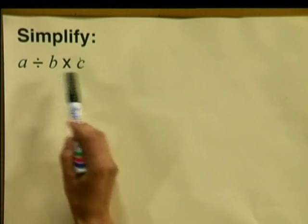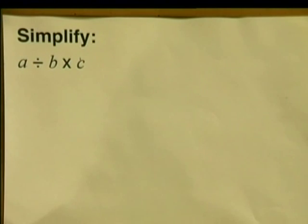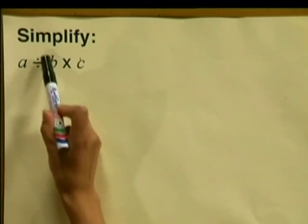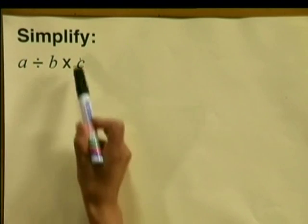Simplify A divided by B multiplied by C. So what do we do here? There are no brackets so we simply work from left to right. We first divide then we multiply.